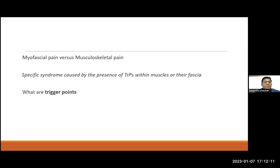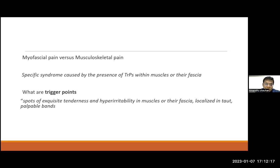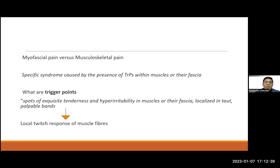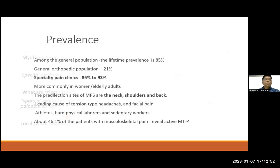What are trigger points? Trigger points are spots of exquisite tenderness and hyper-irritability in muscles or their fascia, localized in a taut or palpable band. When we find trigger points in the muscle, it means we are dealing with myofascial pain syndrome. When we put pressure on the trigger points, it should cause a local twitch response, either with pressure or with a needle.